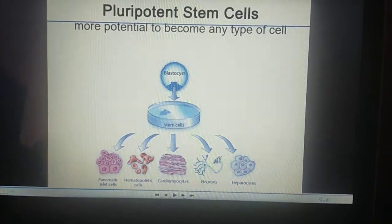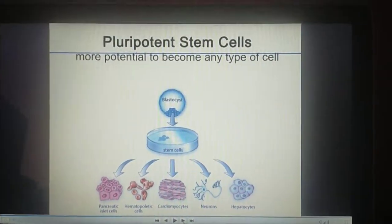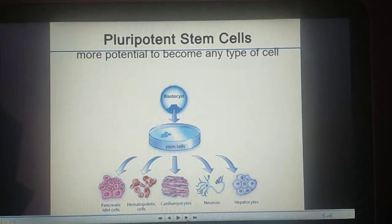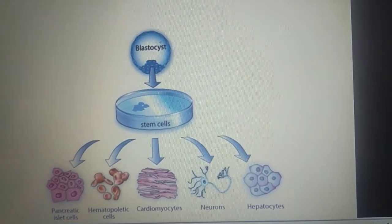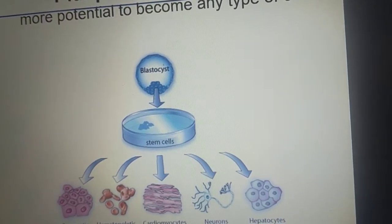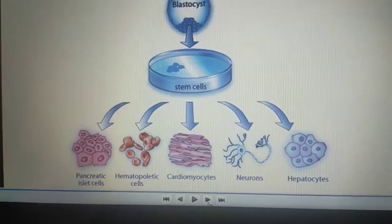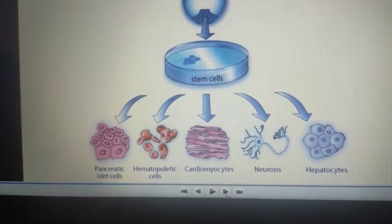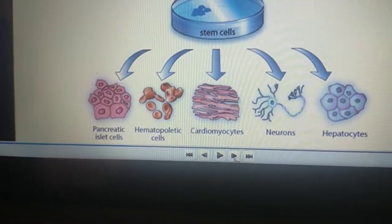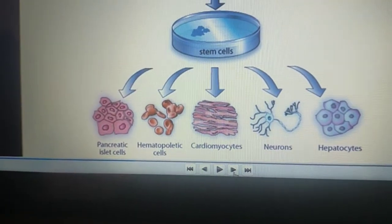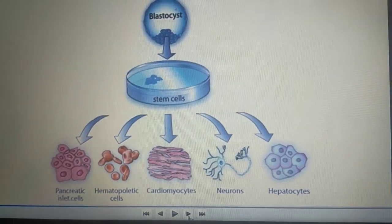Pluripotent stem cells have the potential to become any type of cell. From a blastocyst, we separate stem cells that can be differentiated or trans-differentiated into pancreatic islet cells, hematopoietic cells, cardiomyocytes, neurons, and hepatocytes.